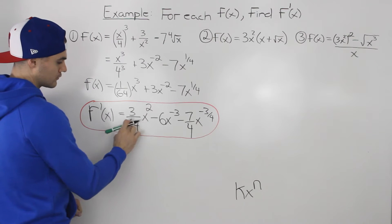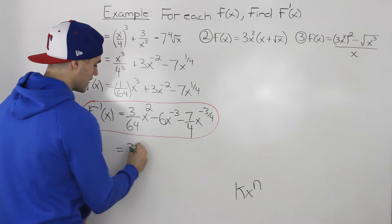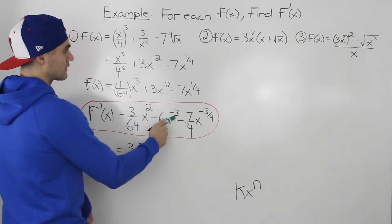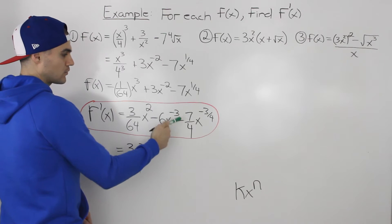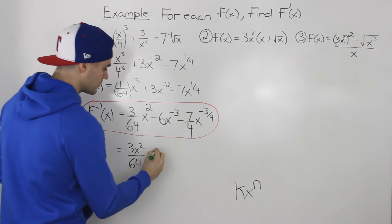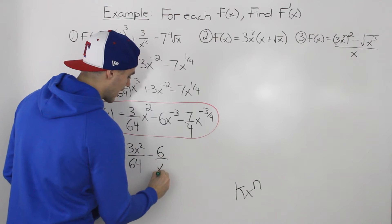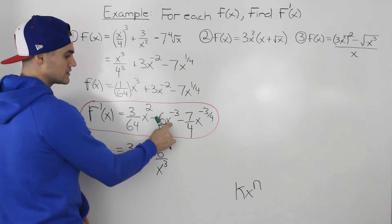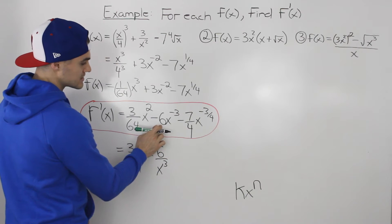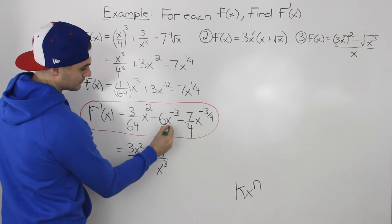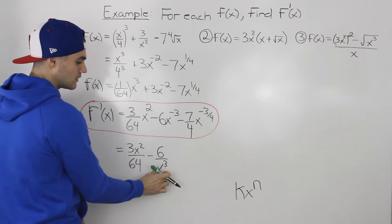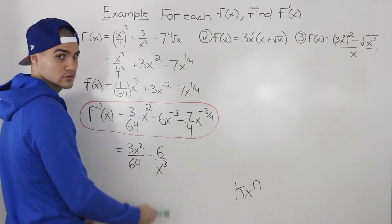Let's make this look nicer. The first term, (3/64)·x², can be combined as 3x²/64. For the second term, negative 6x⁻³: bring the x⁻³ down to the denominator to make it positive, giving minus 6/x³. Notice we only bring down the x, not the constant 6 — the constant 6 is not raised to the power of negative 3. Only the x is, so only the x moves to the denominator.